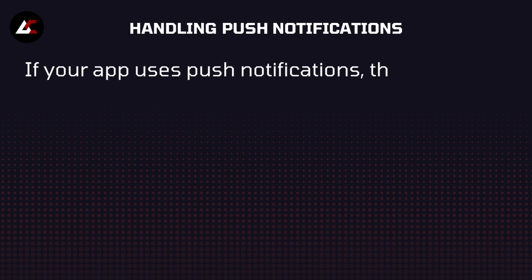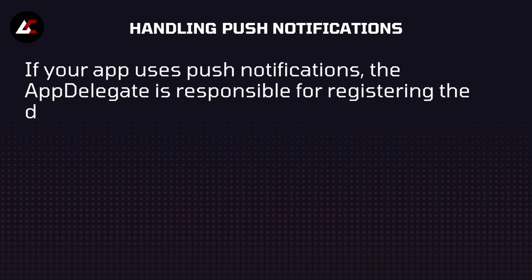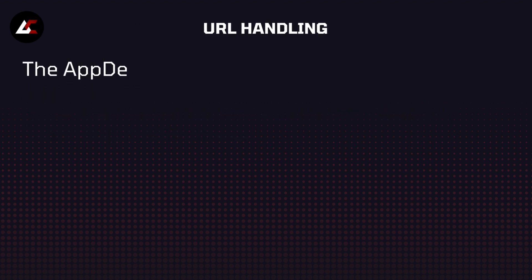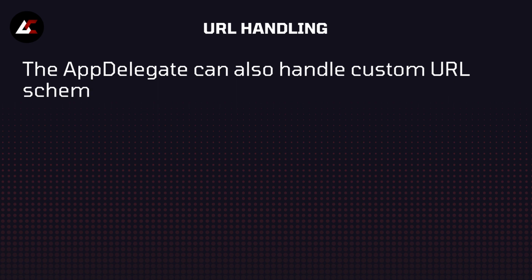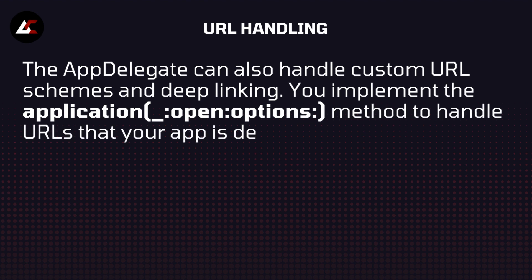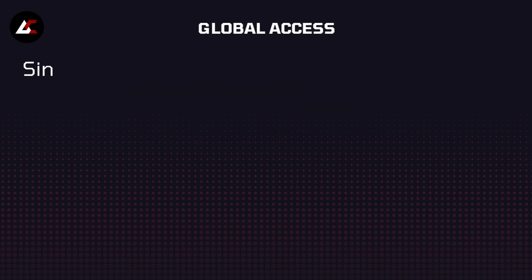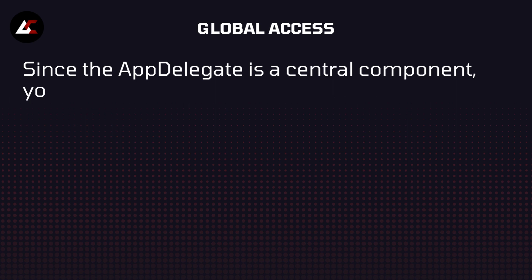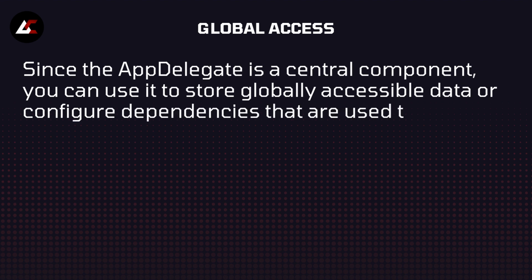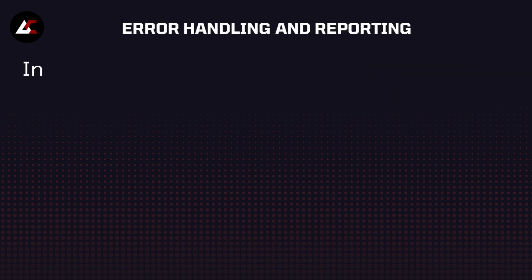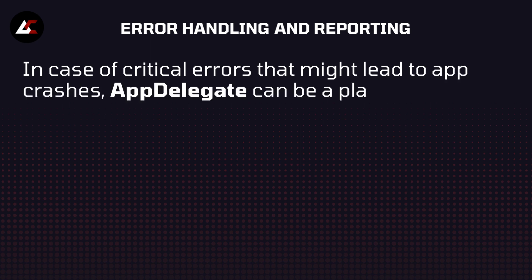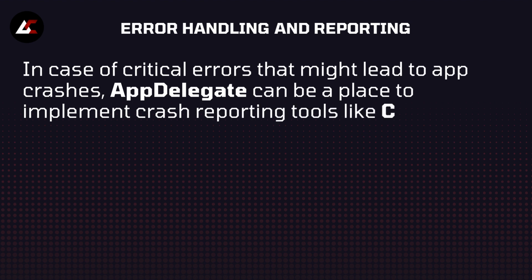Handling push notifications — if your app uses push notifications, the AppDelegate is responsible for registering the device for remote notifications and handling incoming notifications. URL handling — the AppDelegate can also handle custom URL schemes and deep linking; you implement the application method to handle URLs your app is designed to respond to. Global access — since the AppDelegate is a central component, you can use it to store globally accessible data or configure dependencies used throughout your app. Error handling and reporting — in case of critical errors that might lead to app crashes, the AppDelegate can be used to implement crash reporting tools like Crashlytics and Sentry.